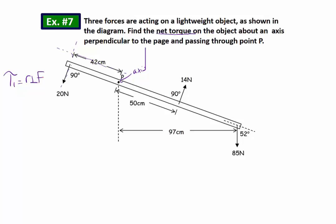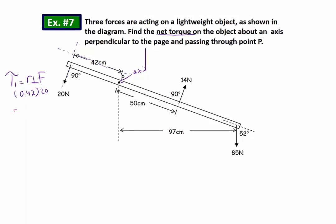So I can use my little form of the equation, r perpendicular F. I don't need to worry about sine. I mean, I can do sine of 90, but it's going to be 1. So the angle between those are 90. I'm going to use that 0.42 meters times my 20 newtons. Now I'm going to get that my torque is going to be 8.4 newton meters. So that's my torque 1.